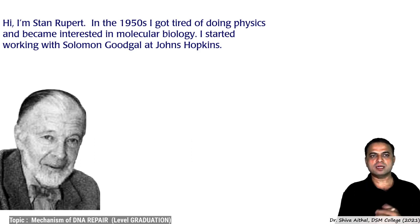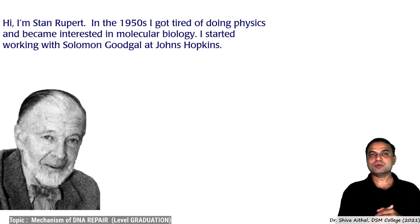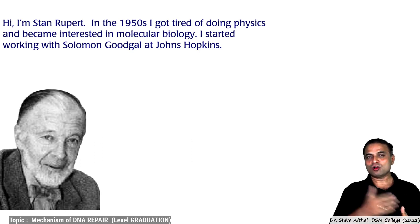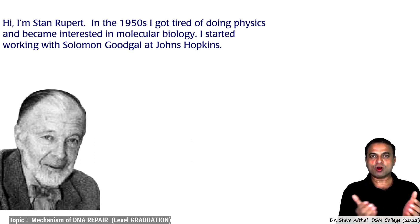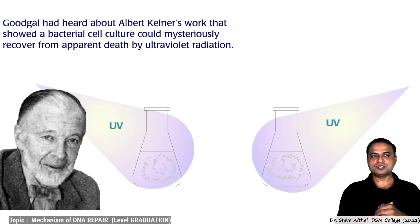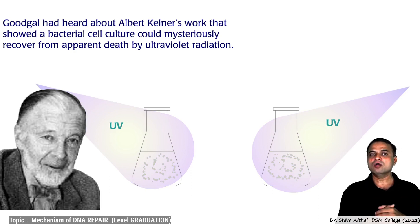These observations were then taken up by Stan Rupert and his colleague Solomon Godgal, working at Johns Hopkins University. Interestingly, Stan Rupert was a physicist who became tired of physics and developed an interest in molecular biology — crossing the boundaries of disciplines, as great scientists of that era did. He carried forward Kellner's idea and showed that bacterial culture could mysteriously recover from death by ultraviolet radiation if exposed to visible light.